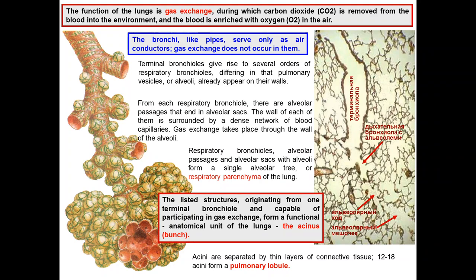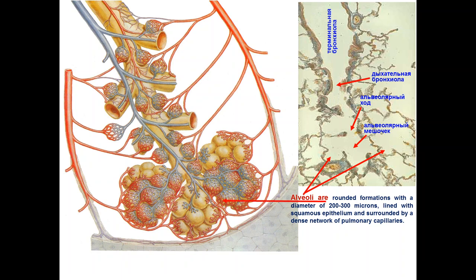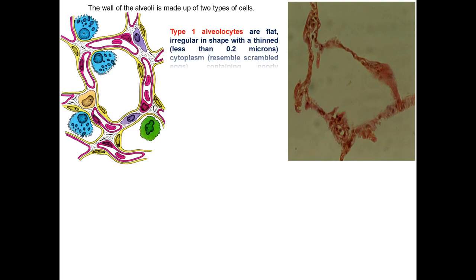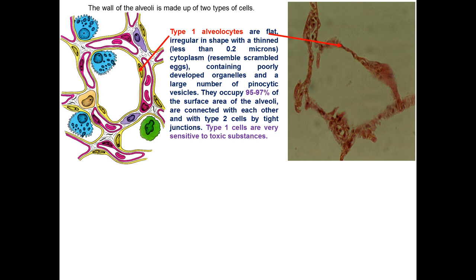Alveoli are rounded formations with a diameter of 200 to 300 microns, lined with squamous epithelium and surrounded by a dense network of pulmonary capillaries. In the human lung there are 300 to 500 million alveoli with a total surface area of up to 150 square meters. The majority of alveoli are located on the periphery of pulmonary lobes — a subpleural location — while the central part of the lobes is occupied by bronchi. The wall of alveoli is made up of two types of cells: type 1 and type 2 alveolar cells.